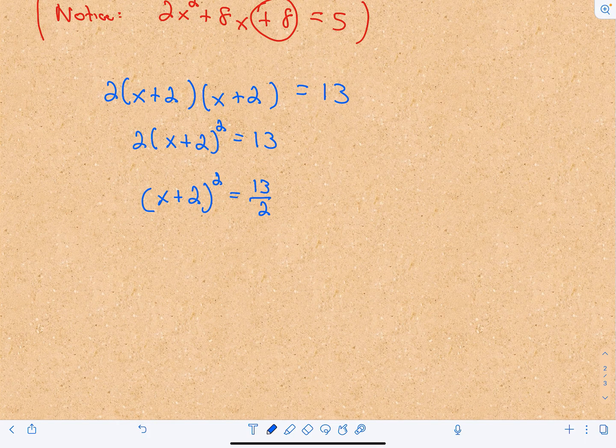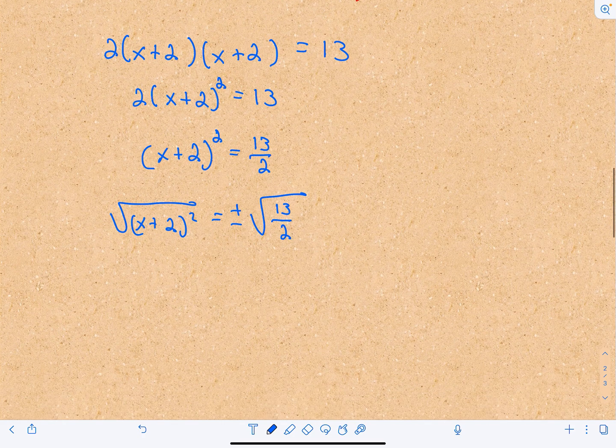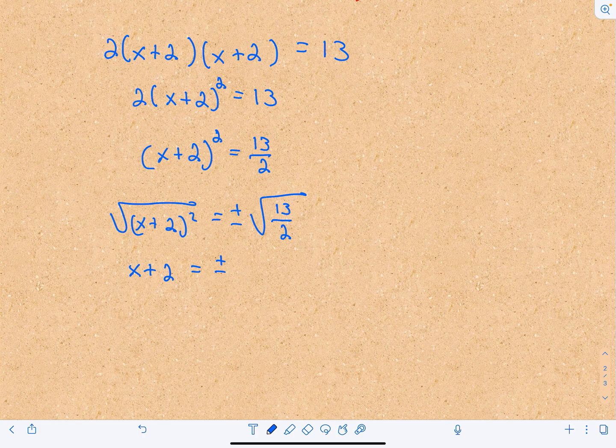Now what we do is take the square root of both sides. Recall when we take the square root, we have to include a positive and negative on one of those sides. On the left we'll be left with x + 2, and on the right we have ±√(13/2).